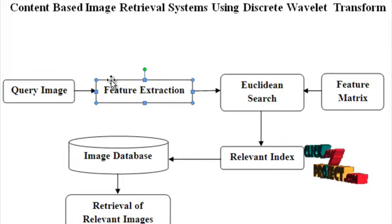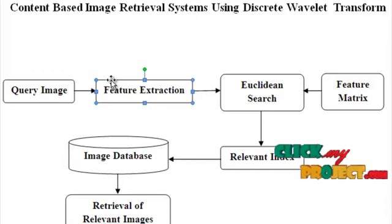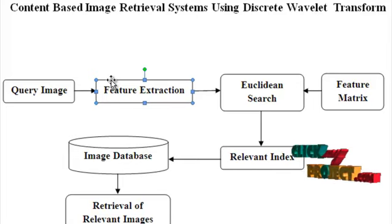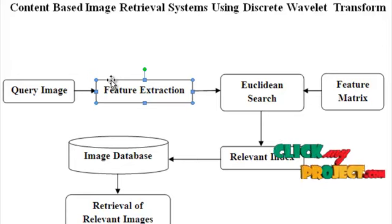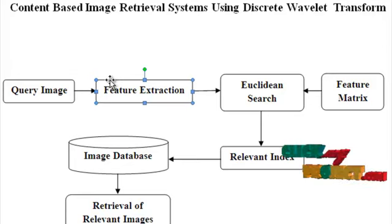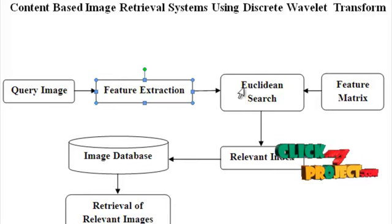The filters used are DB4 and reverse biorthogonal basis. We then extract the statistical features from the extracted coefficients. Specifically, we compute the average measure for the horizontal and vertical coefficients and the energy measure for the vertical coefficients.